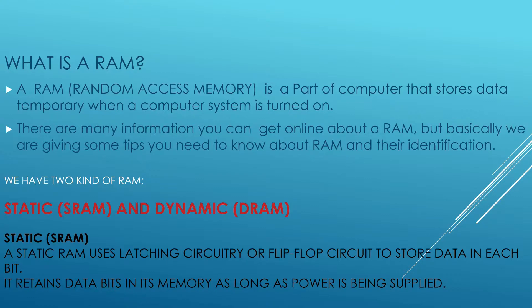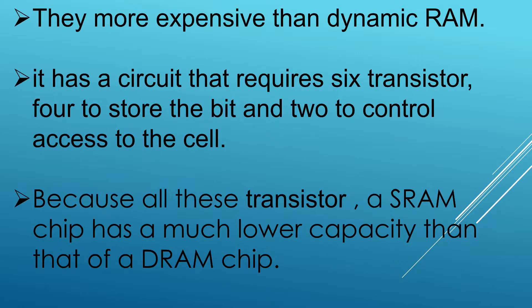We have two kinds of RAM: static RAM and dynamic RAM. A static RAM uses logic circuitry, or a flip-flop circuit, to store data in each bit. It retains data bits in its memory as long as power is being supplied. Static RAM is more expensive than dynamic RAM. Its circuits require six transistors — four to store the bits and two to control access to the cell — giving it much lower capacity than a dynamic chip.